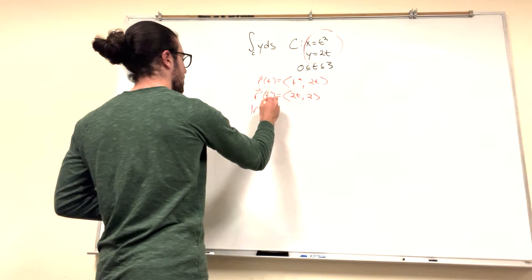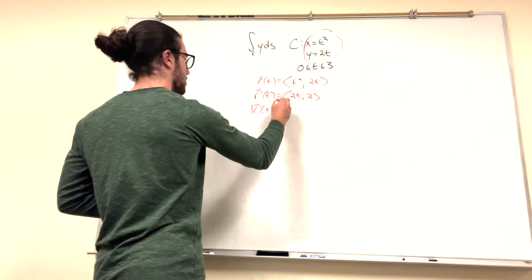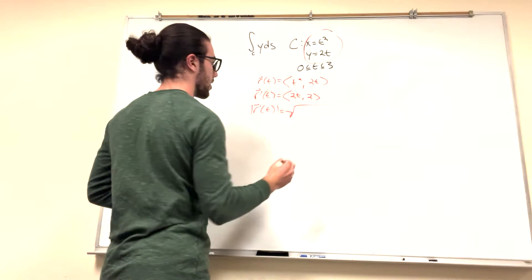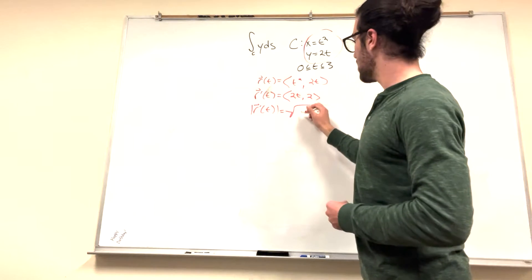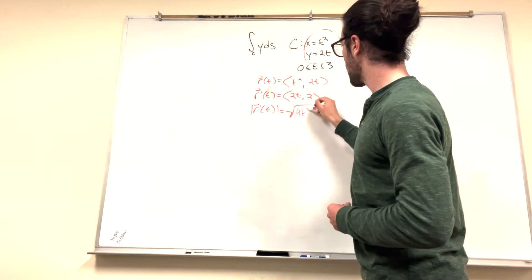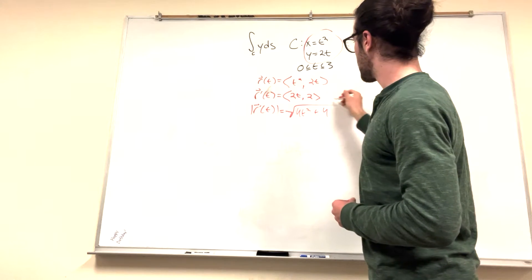Alright. Now the magnitude of this is just going to be equal to the square root of x squared plus y squared. So 2t squared is 4t squared plus 4. Alright so this is what we got here.